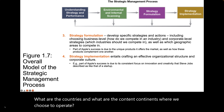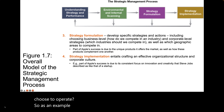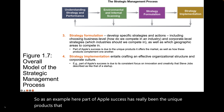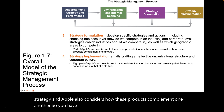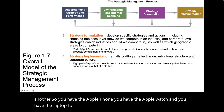As an example, part of Apple's success has really been the unique products that it offers to its marketplace, and that is a business level strategy. Apple also considers how these products complement one another — you have the Apple phone, the Apple watch, and the laptop, and they all work together in an Apple ecosystem.